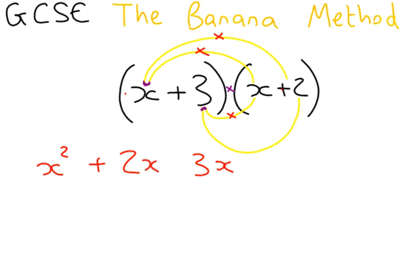The next line is 3 times x, which is 3x and it's a plus and a plus, so it's plus 3x. The final line is 3 times 2, which is 6 and it's a plus and a plus, so it's plus 6.